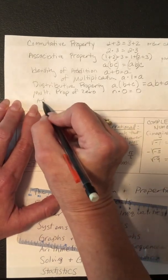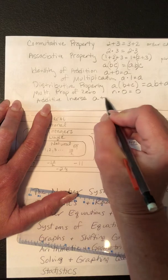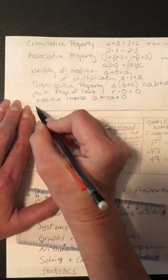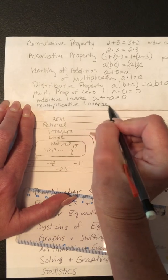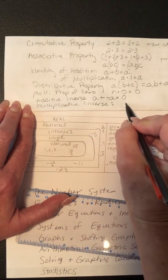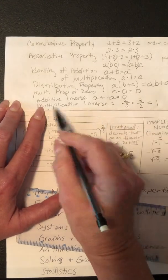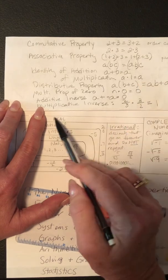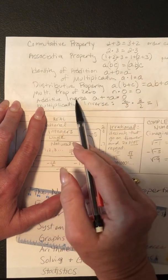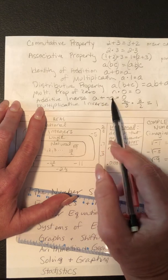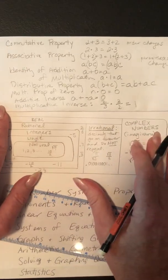The additive inverse property is when you add opposites together to get 0. The multiplicative inverse property is when you multiply two reciprocals together to get 1 — for example, 2/3 × 3/2 = 1. Note: in multiplicative identity you multiply by 1; in multiplicative inverse you get 1. In additive identity you add 0; in additive inverse you add two things to get 0. These are the properties used most in Algebra 1.